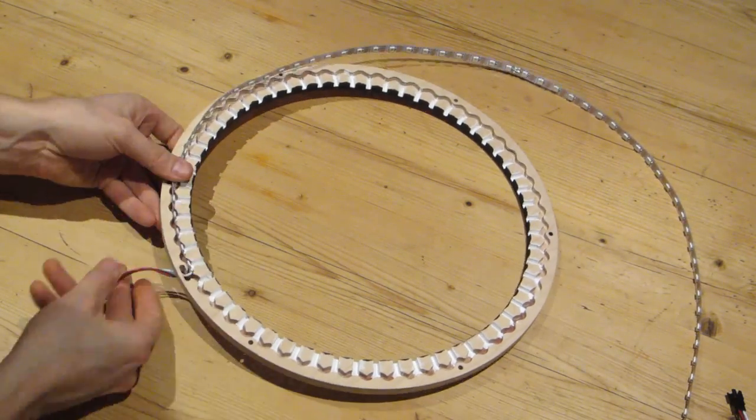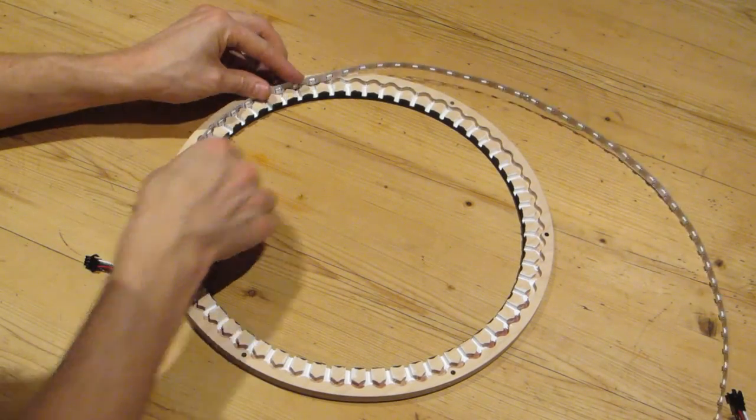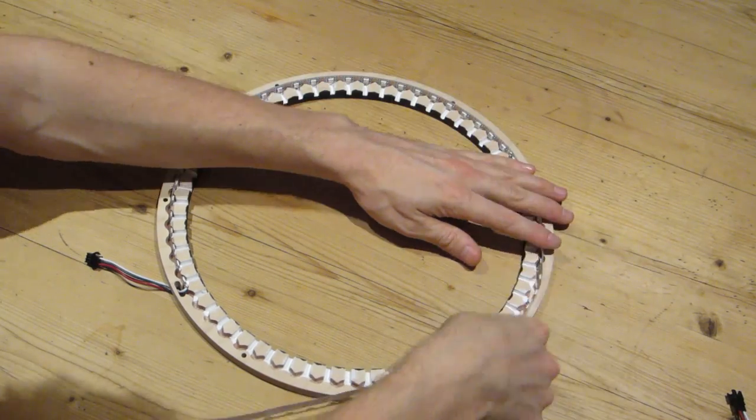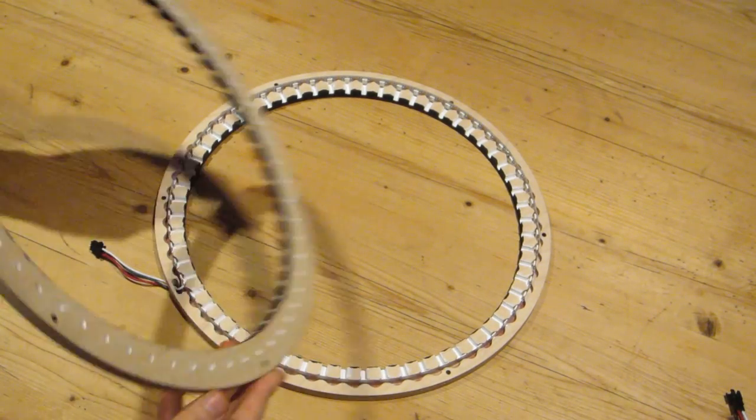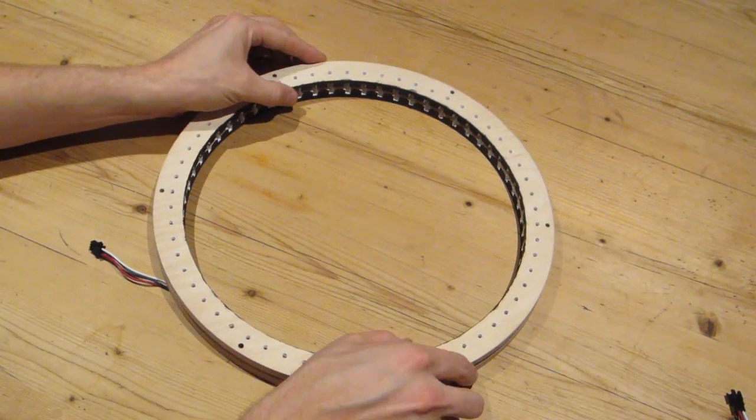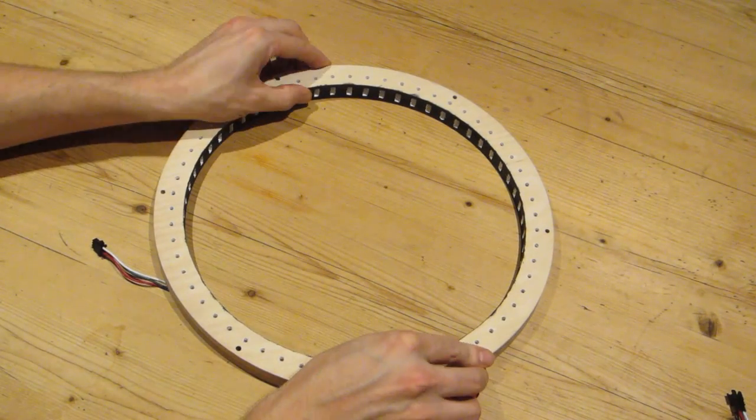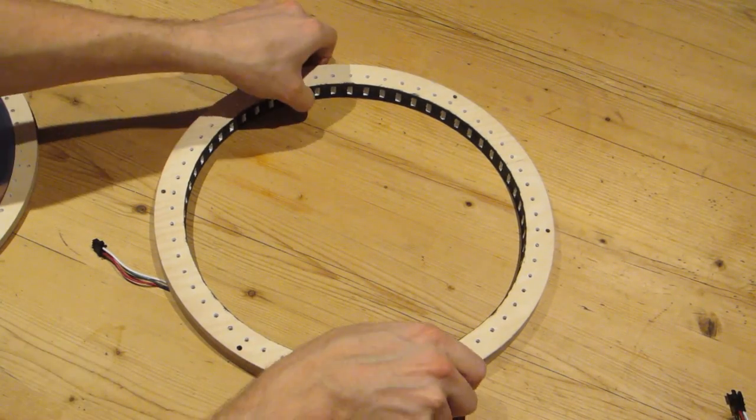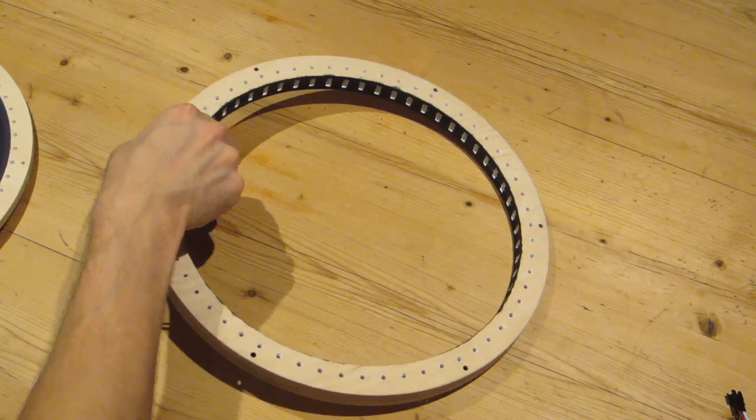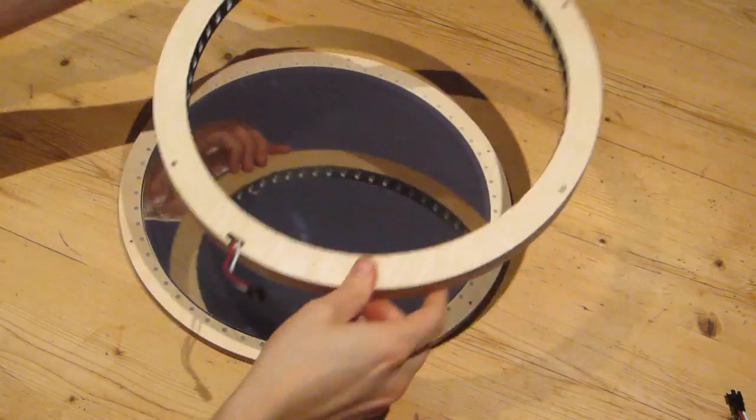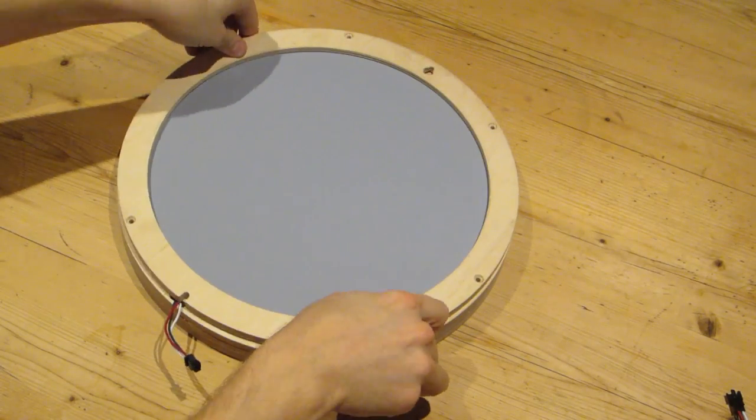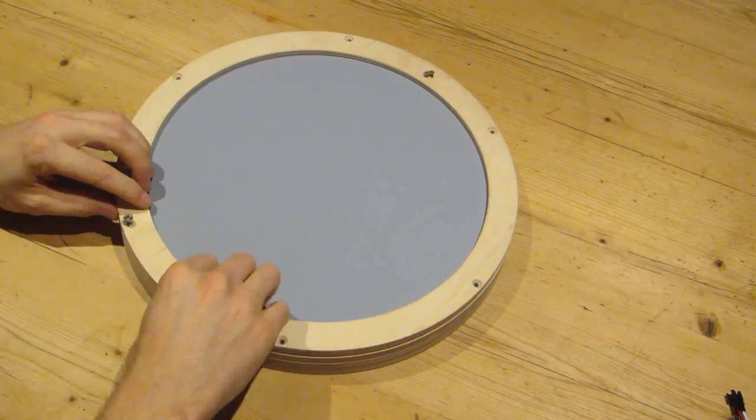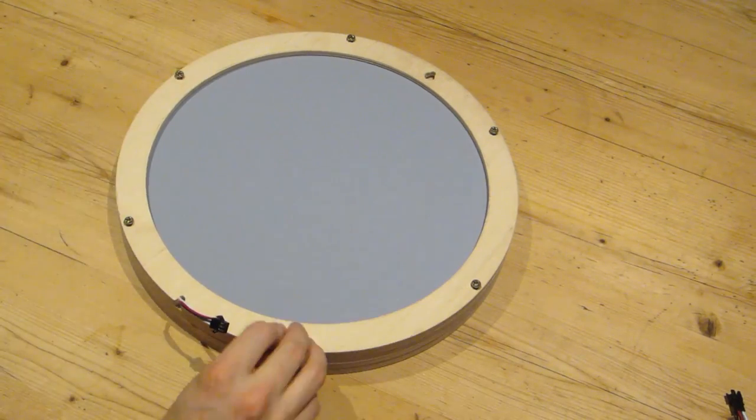Now I have CNC'd this plywood to create slots for each of the LEDs and here you can see that I have painted each slot white and then the inside black and that's to emphasize each light. And then I put that on top of the one way mirror and then put the normal mirror on the back.